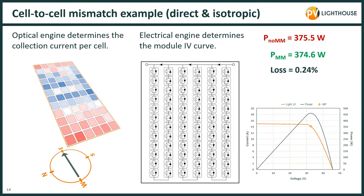A final loss mechanism to mention is cell-to-cell mismatch. The figure on the left shows how the intensity falling on each cell of a module can vary, leading to differences in the current generated by each cell. When the cells are strung in strings or parallel strings separated by bypass diodes, as they are in a module, we can end up with a loss in power. In this example we had a loss of 0.24%.